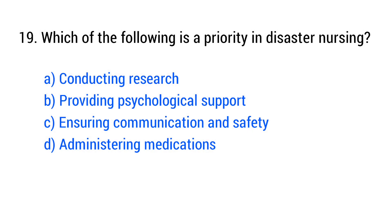Question No. 19. Which of the following is a priority in disaster nursing? The right answer is Option C: ensuring communication and safety.